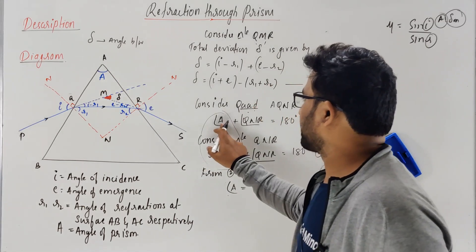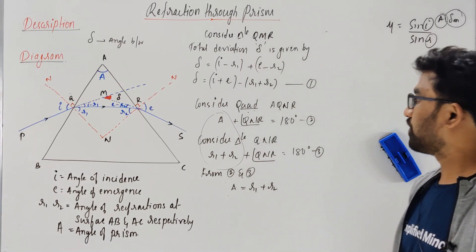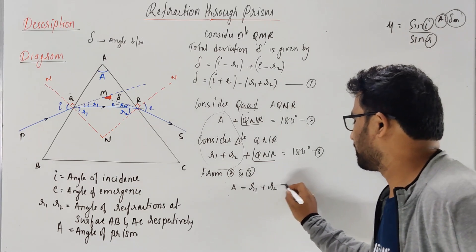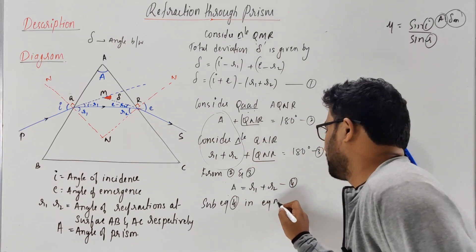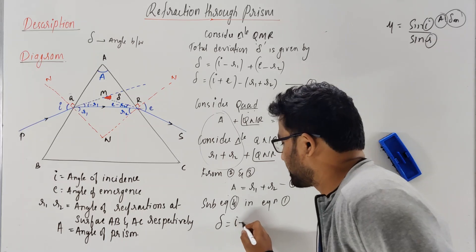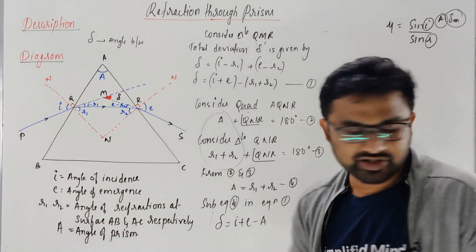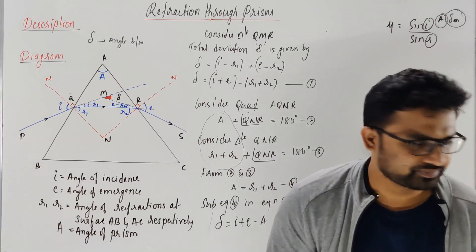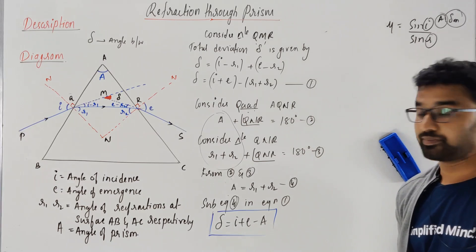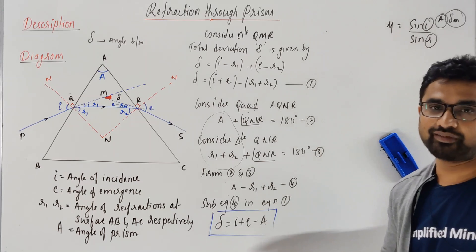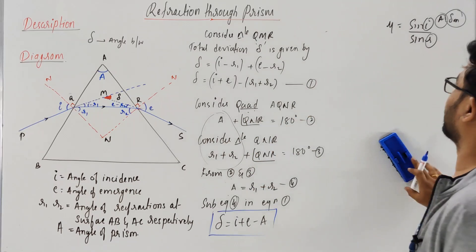So A must be equal to R1 plus R2. Now substituting this equation — let's call it equation 4 — into equation 1, we get deviation equals I plus E minus A. So the deviation at any angle is delta equals I plus E minus A. Please remember this formula — in competitive exams it won't always be minimum deviation; sometimes other deviation values are asked.